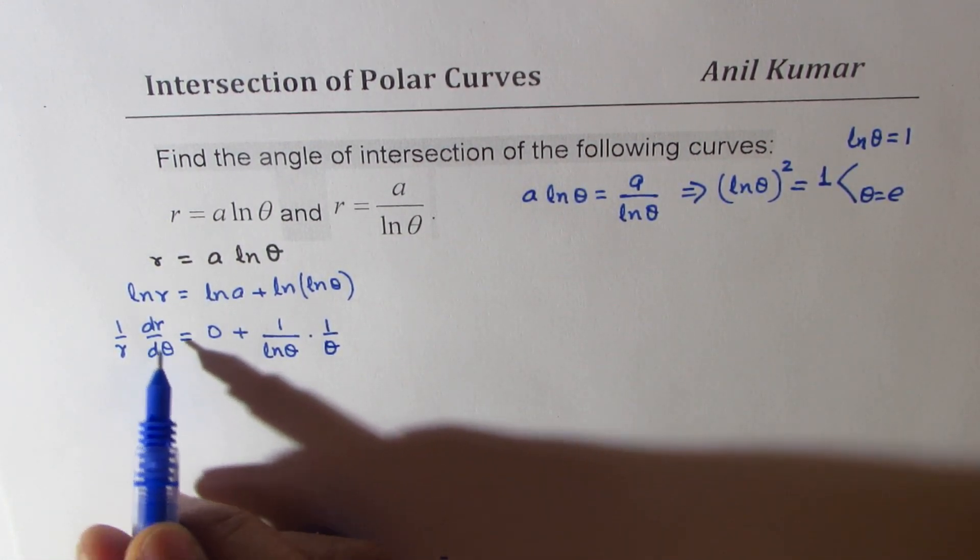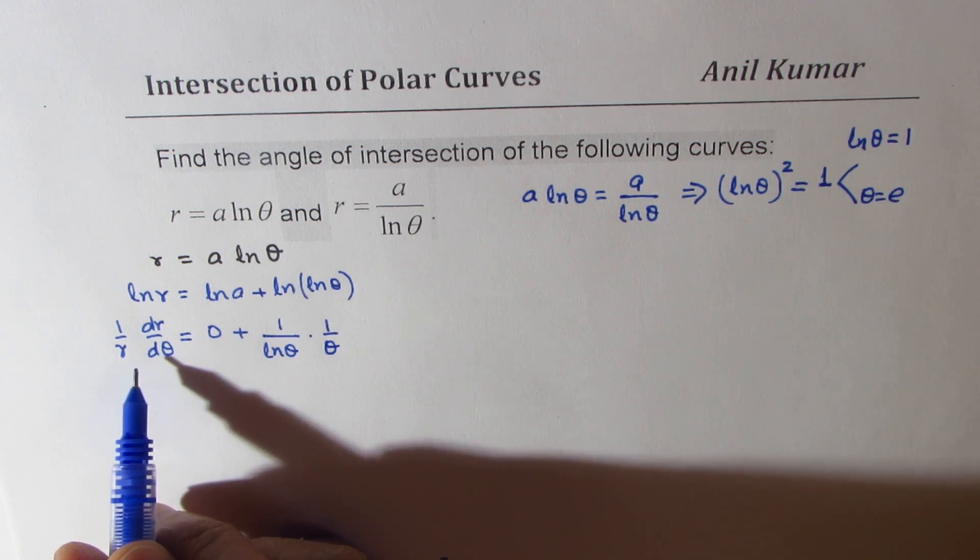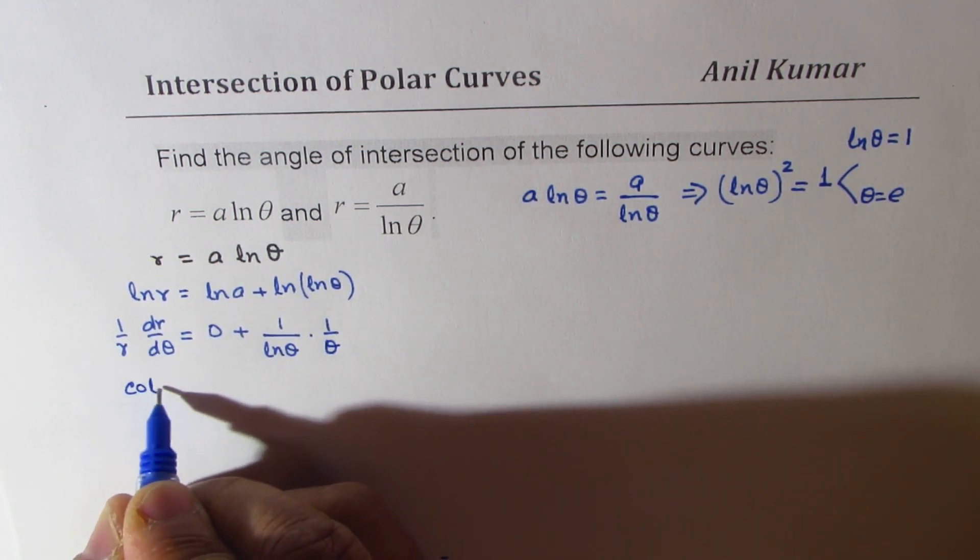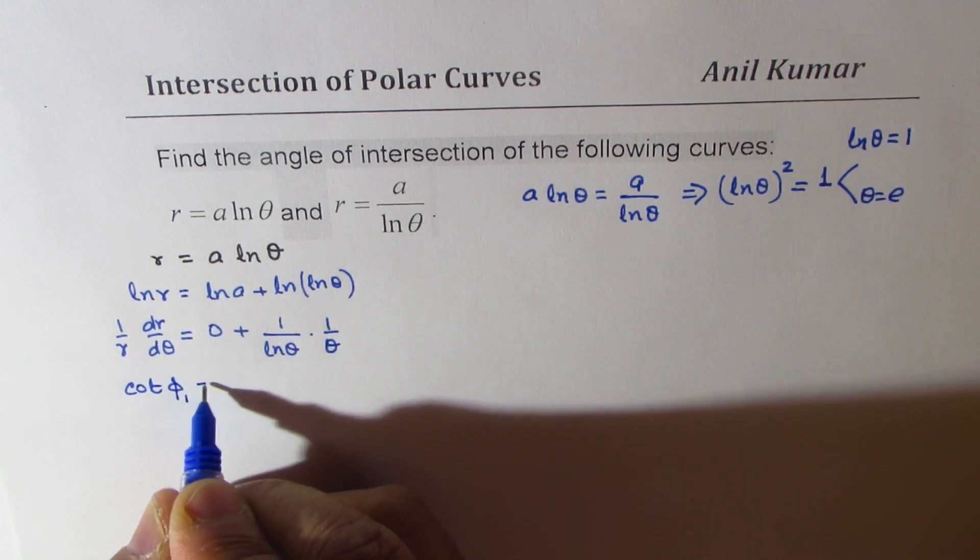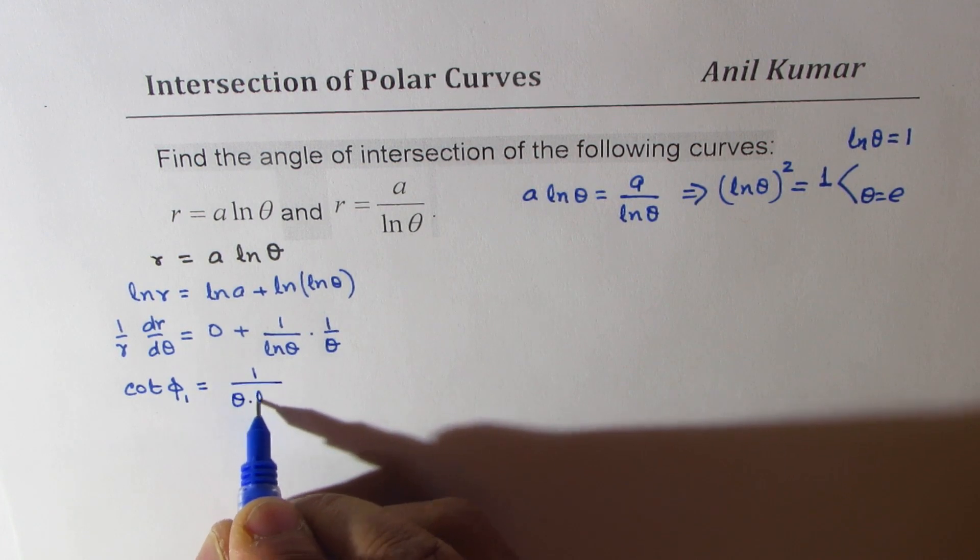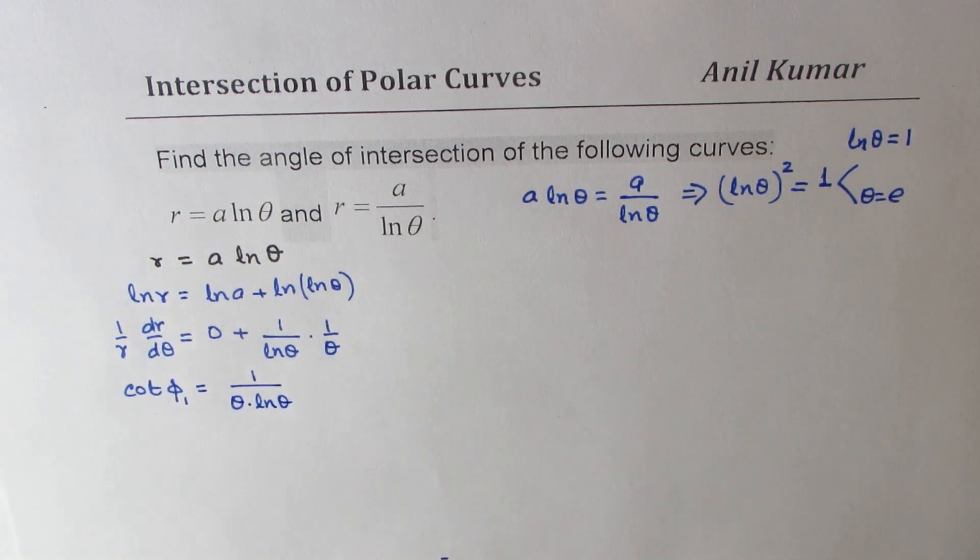So from here, we get, we can say cot of phi 1 equals to 1 over theta times ln theta. So that is one thing we get.